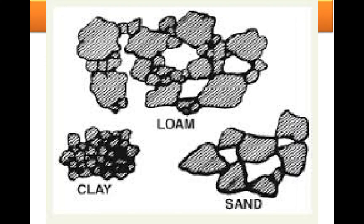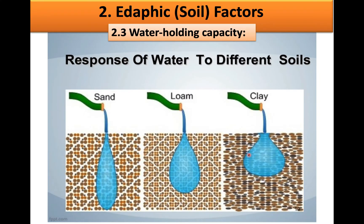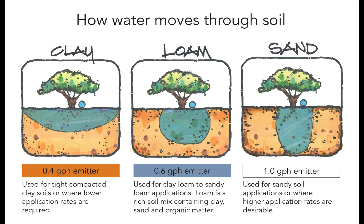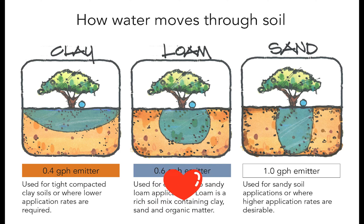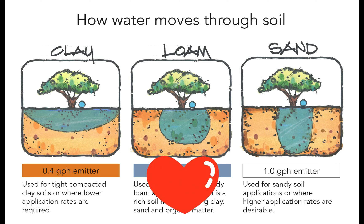Clay has tiny spaces between its soil particles and a high water holding capacity, meaning the drainage of clay is poor and plant roots are able to rot more easily. Loam, however, is the most suitable type of soil for plant growth because it has a medium water holding capacity — it is well aerated and contains sufficient nutrients.